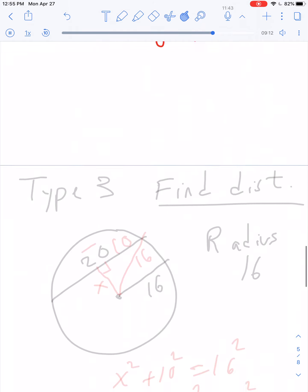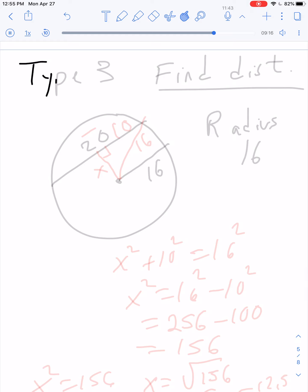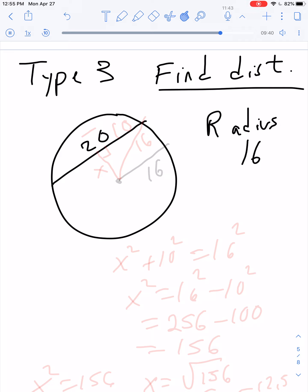Type 3. Type 3 is find the distance from the center. Here's a circle. Let's say this chord is length 20. And I know the radius is 16. So I could draw the radius this way. I want to know how far away. Here's what I'm looking for in red. I'm looking for X. Well, that seems impossible. But what you've got to realize is you can draw the radius anywhere you like. So rather than drawing the radius there, let's draw the radius over here. That makes much more sense.